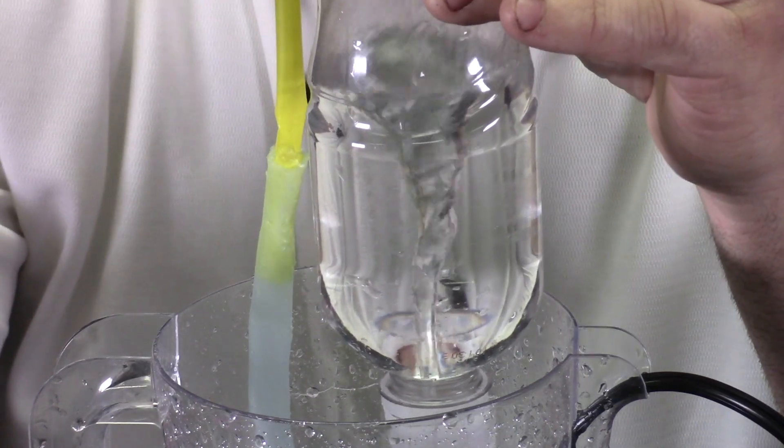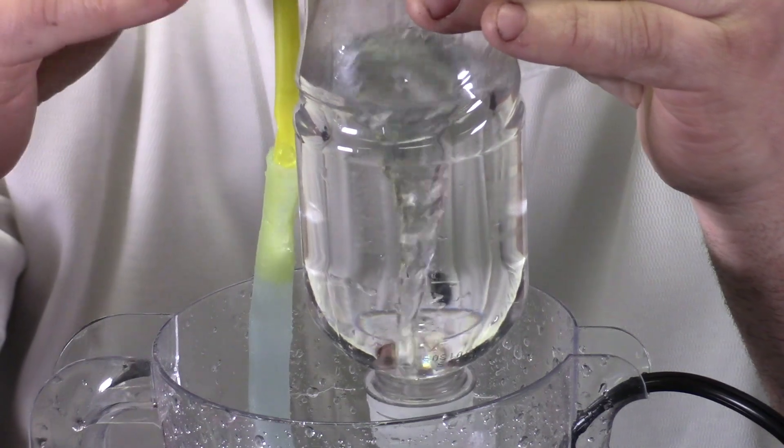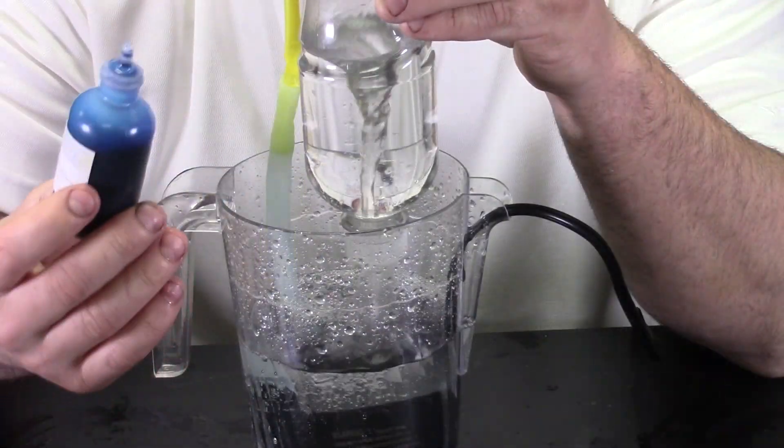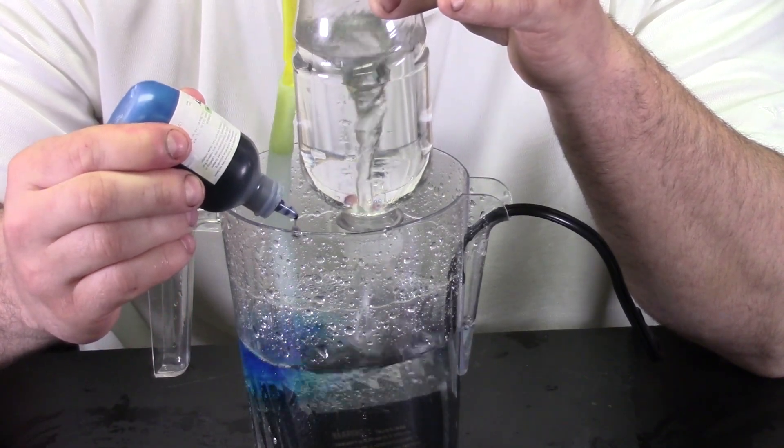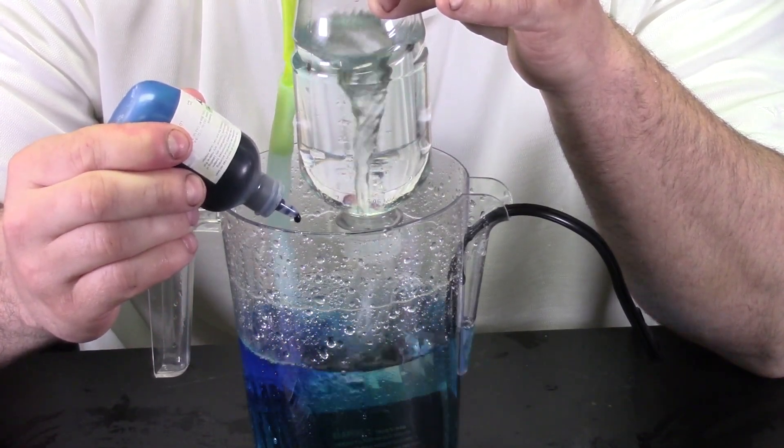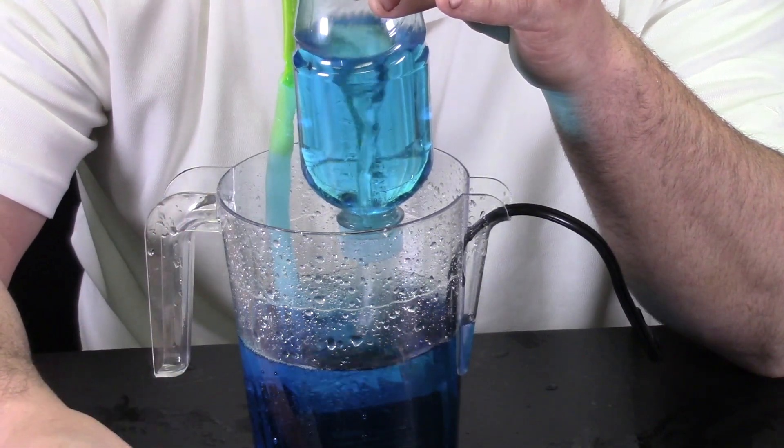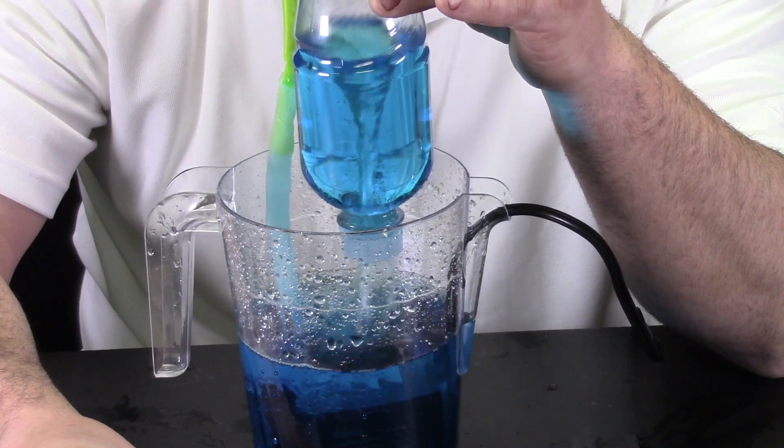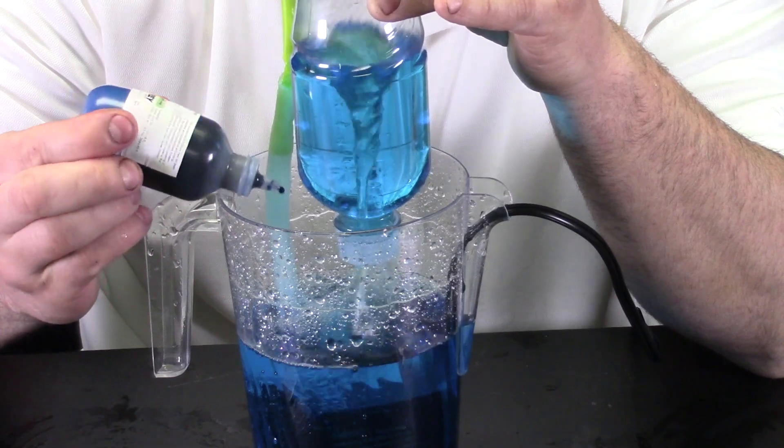Remember we also have another video where we made tornadoes using different techniques that you can click on and watch. Now let's try adding a few drops of food coloring and see what our tornado looks like. It might take a while for it to pump up through. You can see our tornado changing colors. We can turn it any color: blue, red, green, yellow. Pretty neat effect.